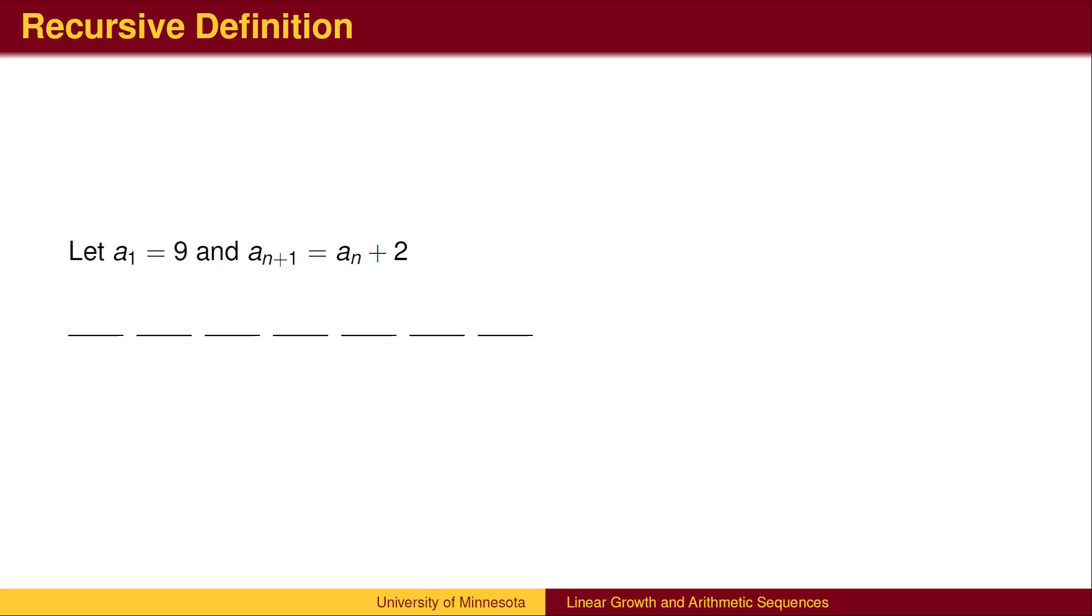We are now ready to tackle the four types of problems stated in the introduction. First, given a recursive definition, find the sequence. This is straightforward. Given the initial term, merely add the common difference to get successive terms. In this case, we begin with 9, and then add 2 to get each successive term.